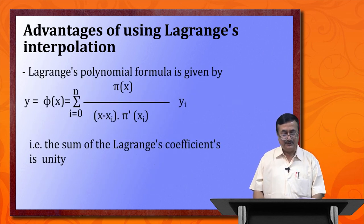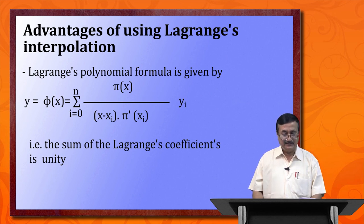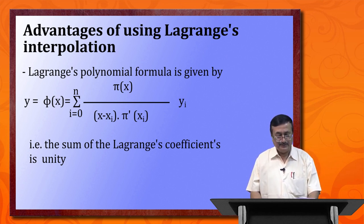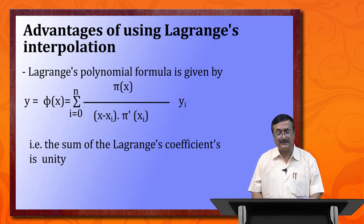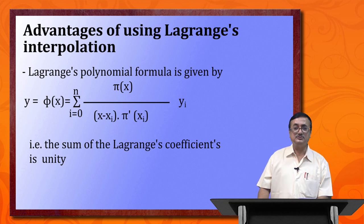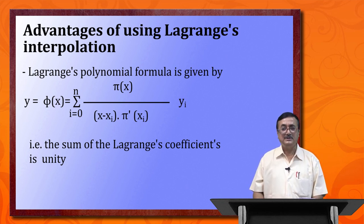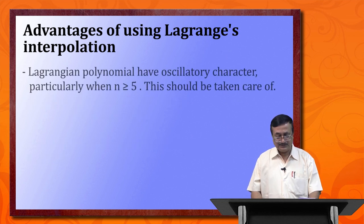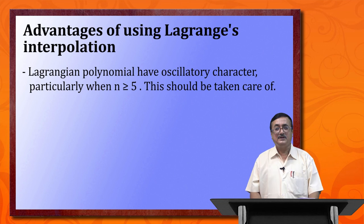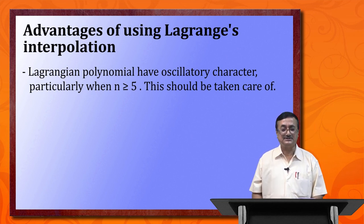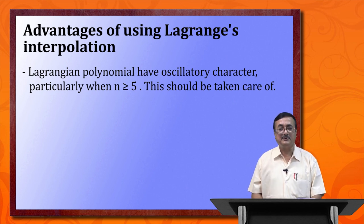Lagrange's polynomial formula is given by y = phi(x), with coefficients L_i(x) = phi(x) / [(x - x_i) * phi'(x_i)]. Observe that if we sum L_i over i = 0 to n, we get 1 — that is, the sum of the Lagrange coefficients is always unity. This result can be used as a checking formula for the Lagrange polynomial obtained in a problem. Lagrange's polynomial also has a disadvantage: when n ≥ 5, the polynomial gets an oscillatory form and oscillates within the limits of interpolation.